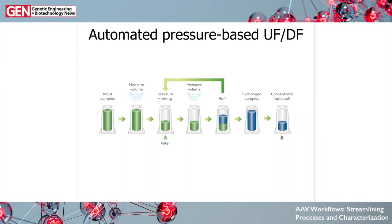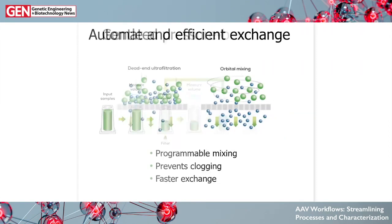BigTuna will measure the volume using a non-contact ultrasonic volume sensor, then begins the buffer exchange process where it uses positive pressure to push sample down through the bottom of the membrane. Critically, it also uses orbital mixing so that we don't have over-concentration at the membrane, and everything stays in solution and well-mixed. At the end of one positive pressure cycle, BigTuna measures the volume again, figures out how much buffer passed through the membrane, and refills with the new buffer. Repeat that cycle until you have 95 or 99 percent exchange, and optionally concentrate your sample up higher at the end.